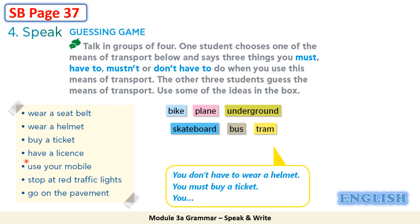Here are the ideas you can make use of: wear a seatbelt, wear a helmet, buy a ticket, have a license, use your mobile, stop at red traffic lights, go on the pavement. For example: you don't have to wear a helmet — which means of transport? Plane, underground, bus, tram.